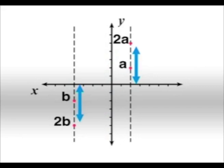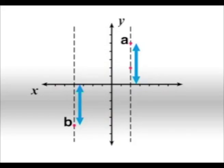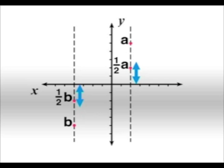If that is a stretch, does compression work in the opposite direction? Absolutely. If the scale factor is less than 1 — say, one half — then the distance becomes half of a and half of b, and the points move closer to the x-axis.